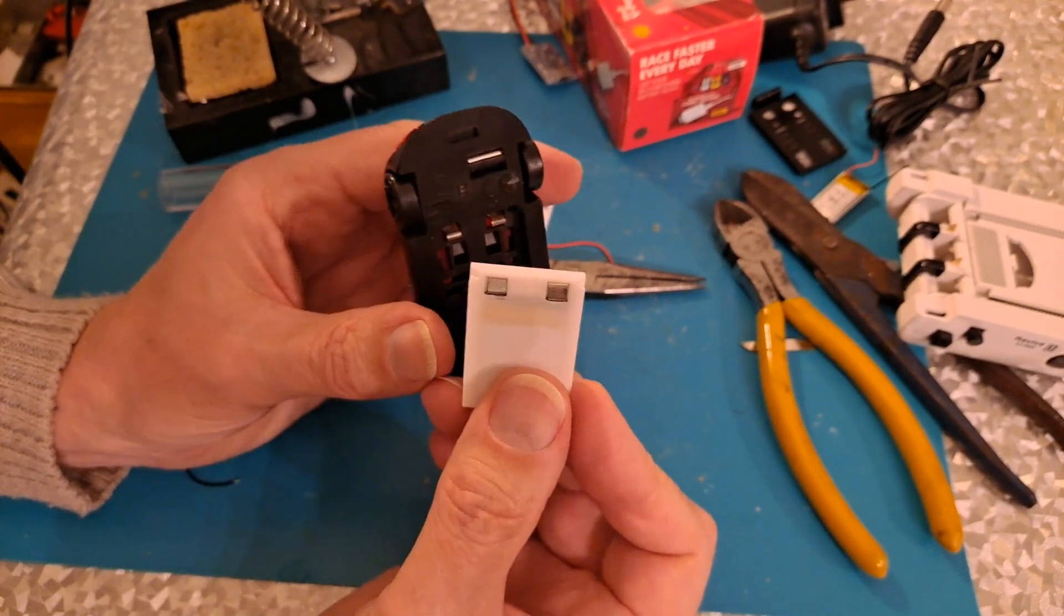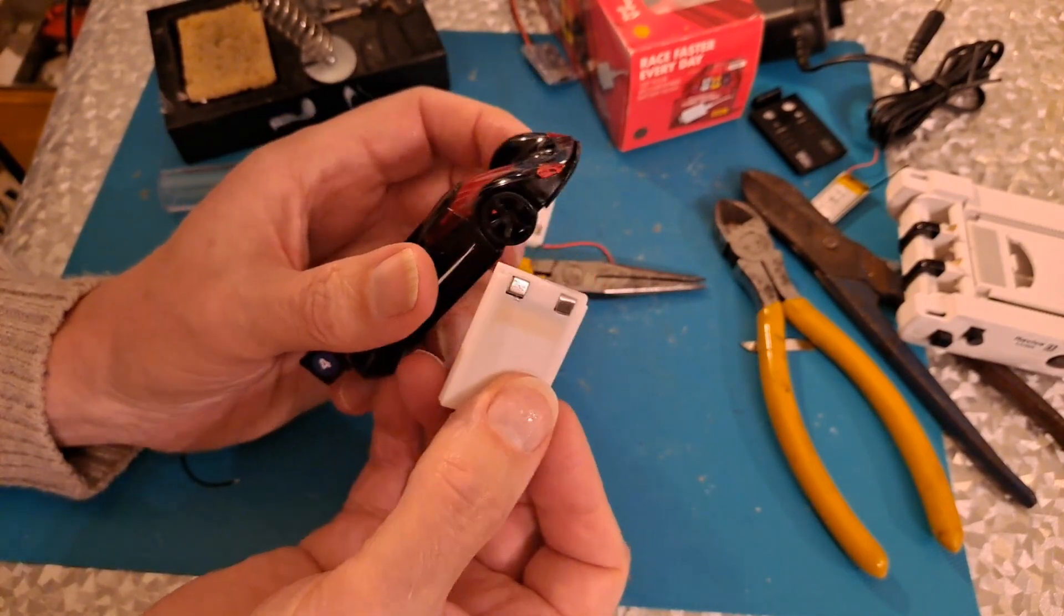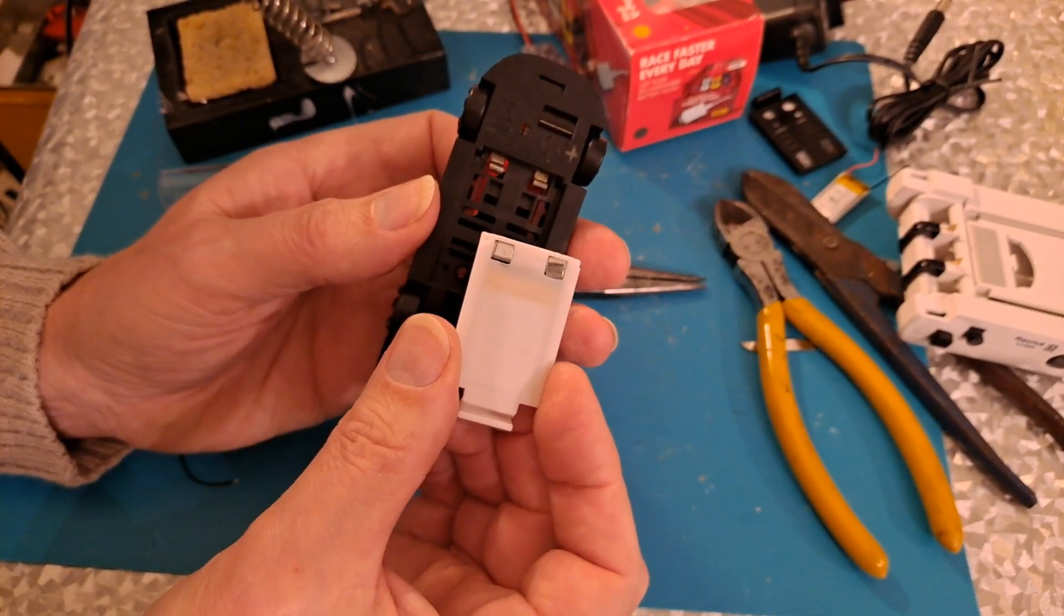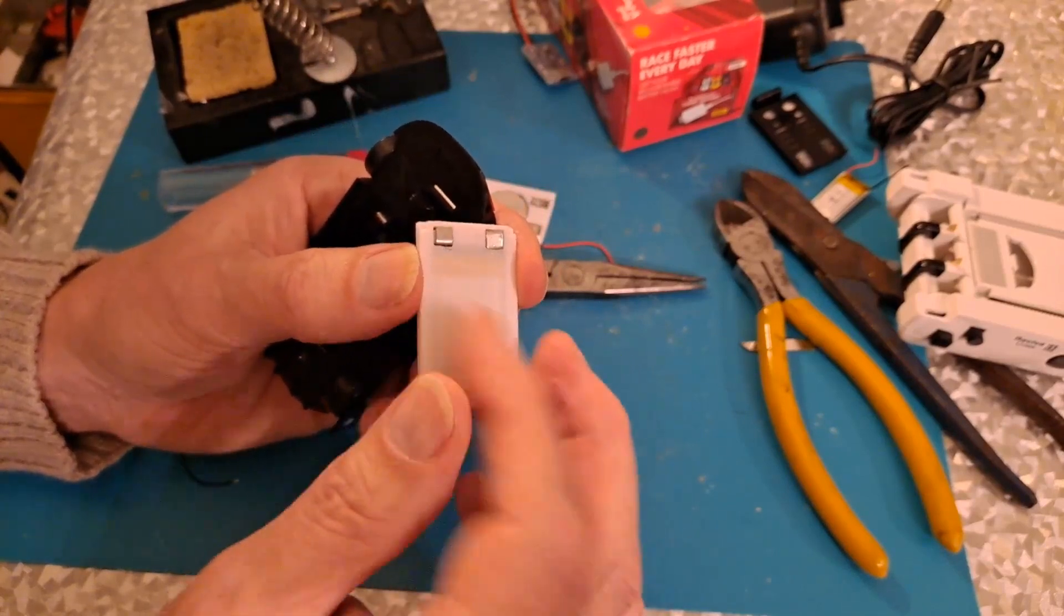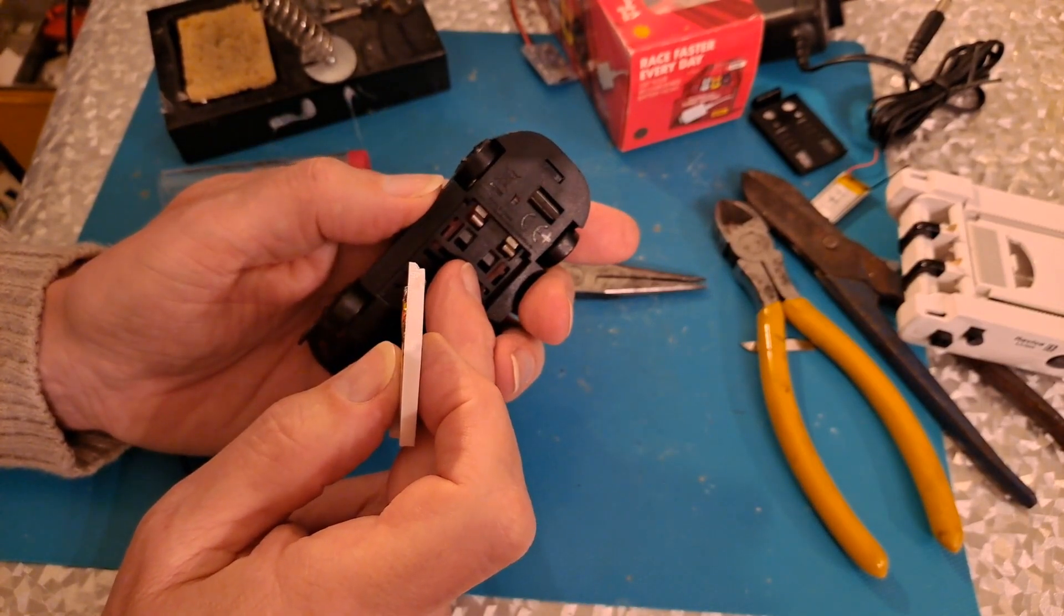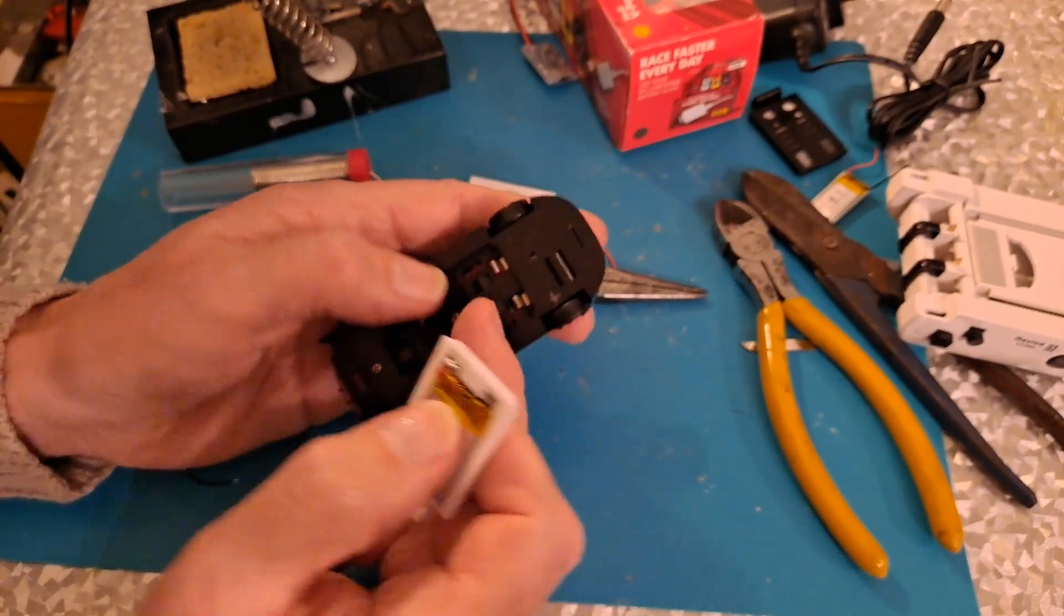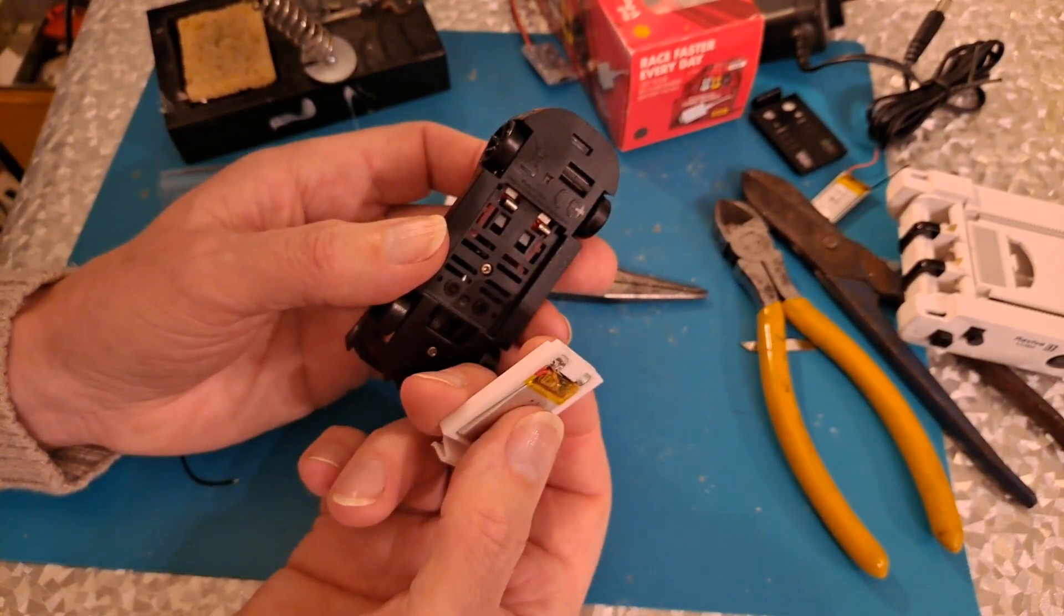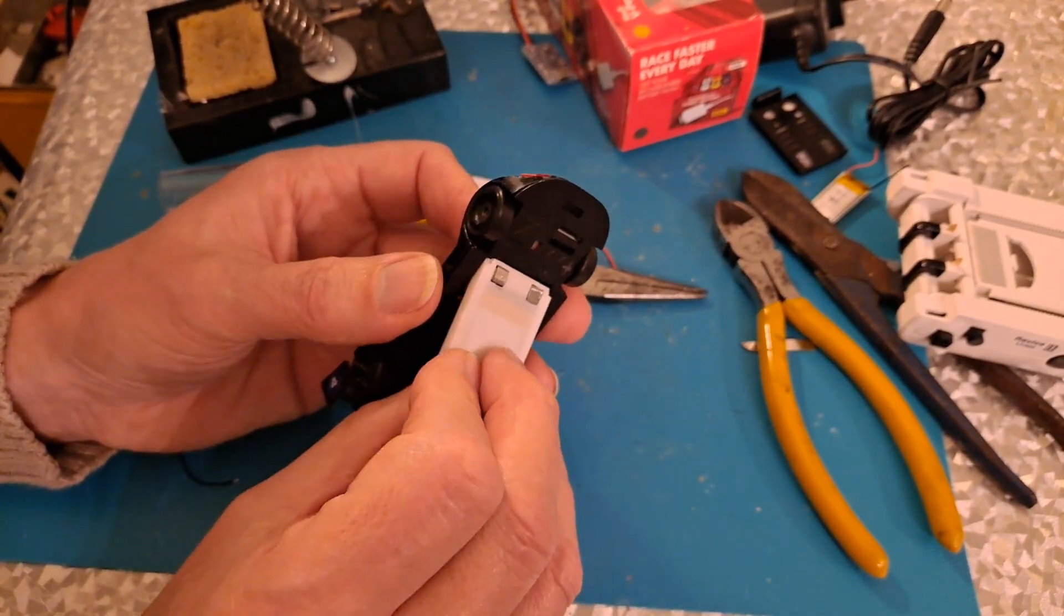And if we hold that in place looks like we have power. Now what would have been really handy would have been an on off switch because as soon as I plug this in it runs. So if I was going to spend more time on this then I would look at some sort of on off switch and I don't see any way I can actually fit it into the battery case here. There just isn't enough space. So I would have to modify the car.